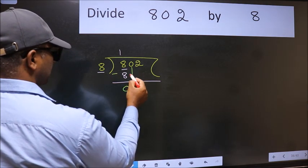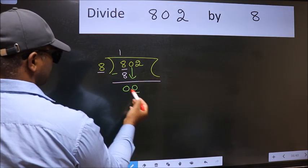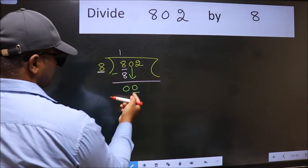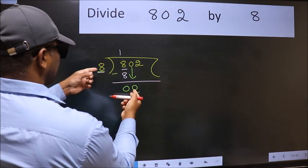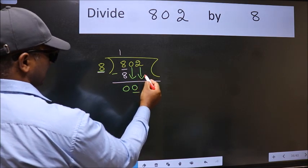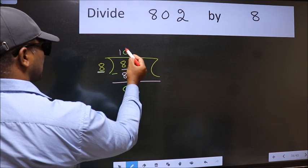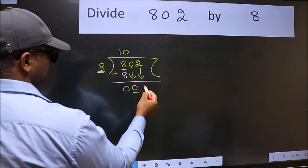After this, bring down the next number. So 0 down. Here we have 0 and here 8. 0 is smaller than 8, so we should bring down the second number. The rule is to put 0 here, then only can we bring this number down.